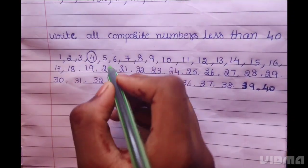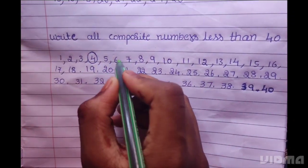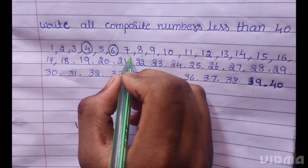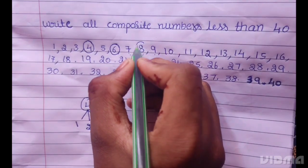5 is prime number, 6 is composite number, 7 is prime number, 8 is composite number.